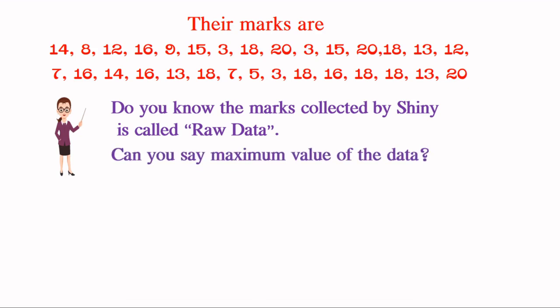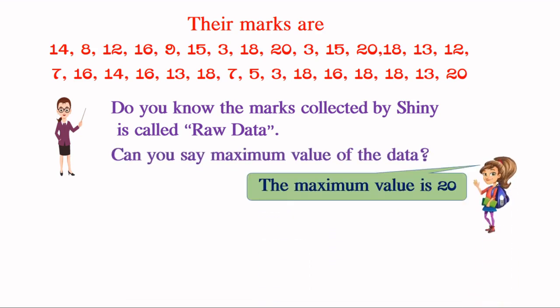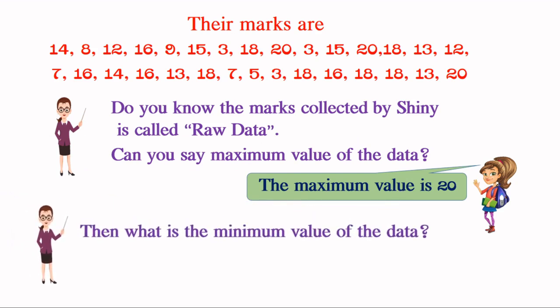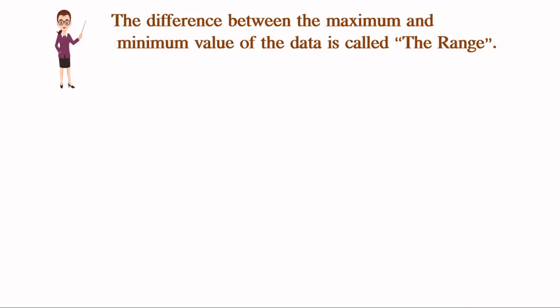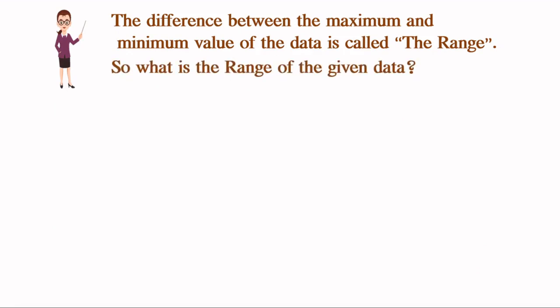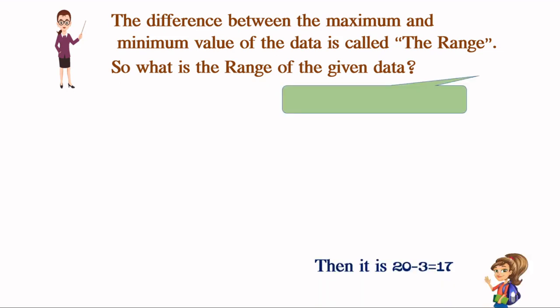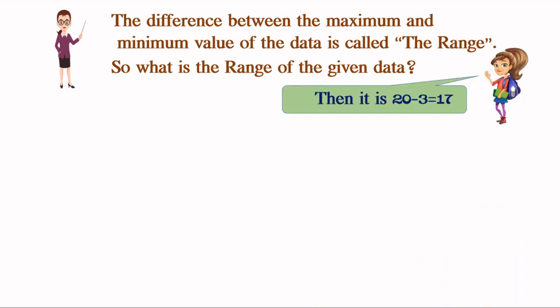Can you say the maximum value of the data? The maximum value is 20. What is the minimum value of the data? The minimum value is 3. All the observations are in between 3 and 20. The difference between the maximum value and minimum value of the data is called the range. The maximum value is 20 and the minimum value is 3, so 20 minus 3 equals 17.